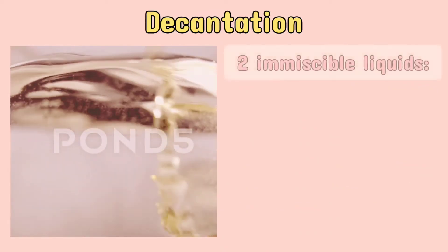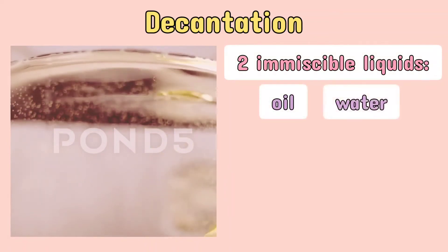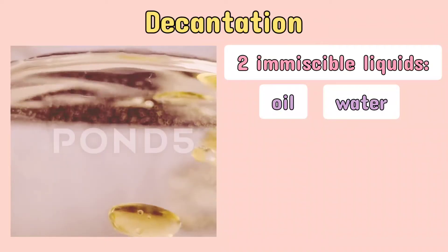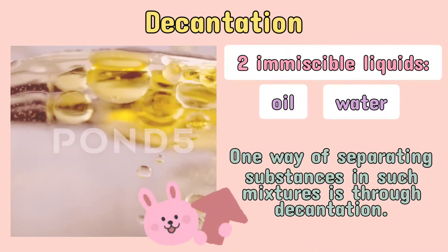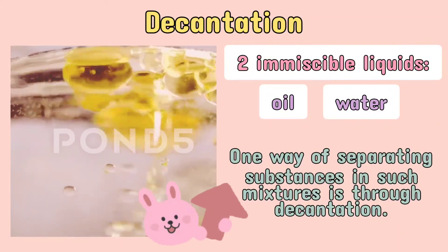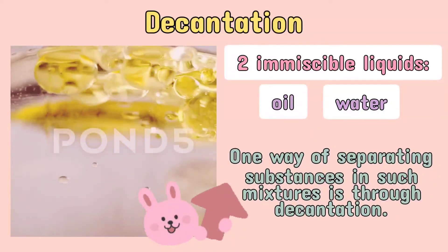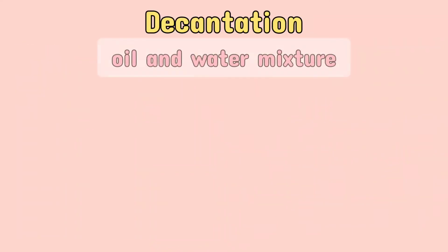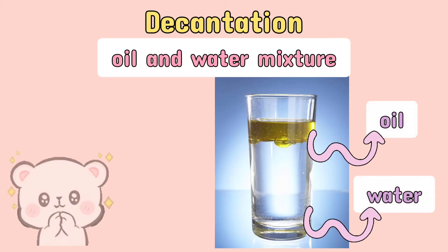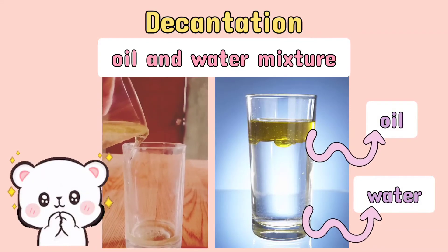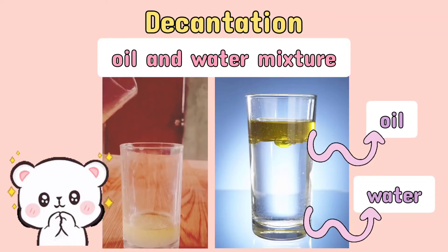In a mixture of two immiscible liquids, such as oil and water, one substance stays on top of the other in the container. One way of separating substances in such mixtures is through decantation. In the case of the oil and water mixture, oil can be separated by decanting or slowly pouring it into another container, leaving the water behind.